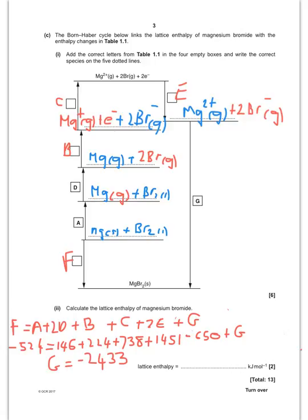So for A, A, they tell me, is the atomisation of magnesium. So hopefully you can see that going from there to there, I've turned one mole of magnesium solid into one mole of magnesium gaseous atoms.